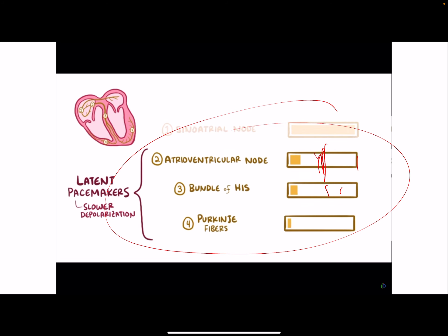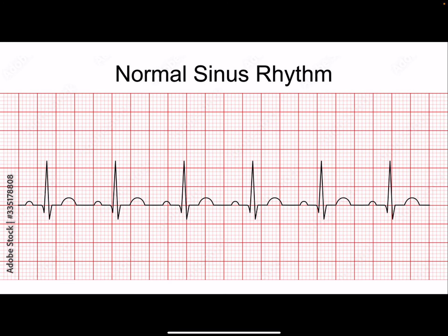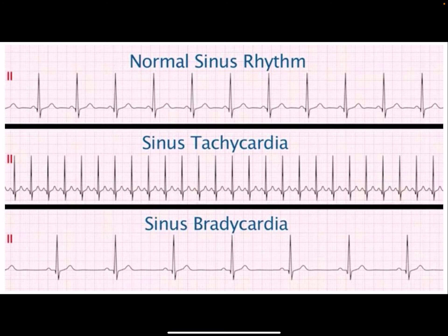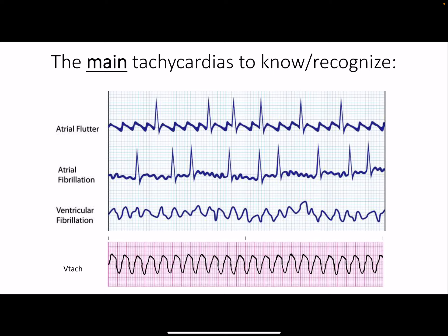Normal sinus rhythm shows smooth, regular intervals. Counting the boxes here gives roughly 80–85 bpm. Sinus tachycardia is fine — maybe you're exercising. Sinus bradycardia is fine — maybe you're sleeping. The more important irregular tachycardias are atrial flutter, atrial fibrillation, ventricular fibrillation, and ventricular tachycardia.